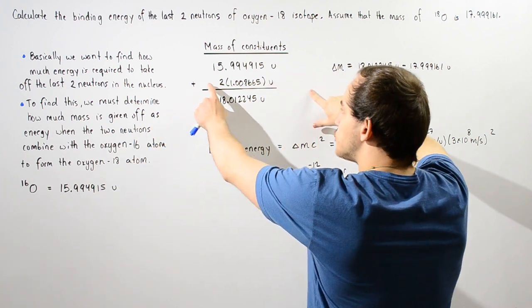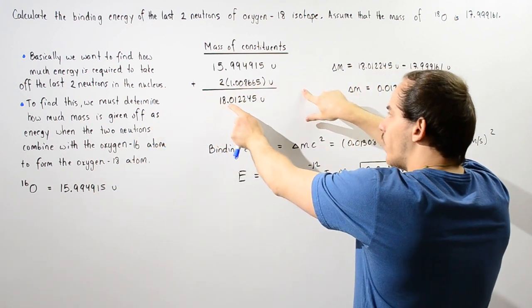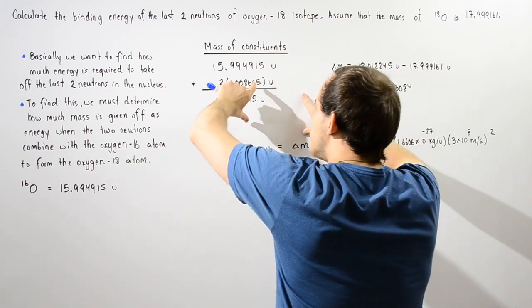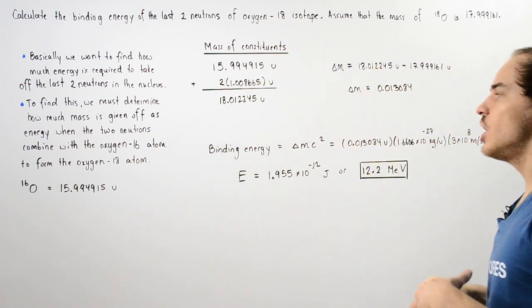This plus two times the mass of one neutron gives us 18.012245u. This is basically what the mass of the oxygen-18 should be.